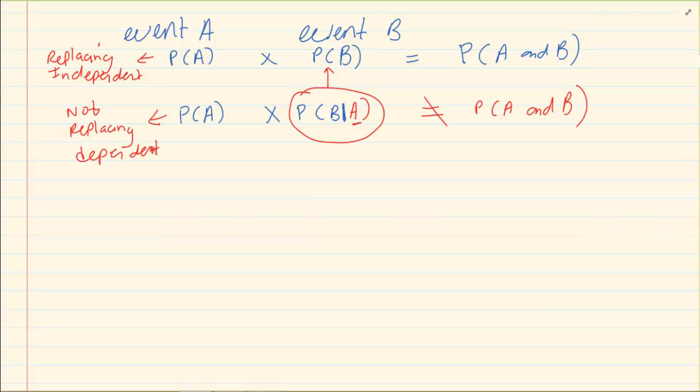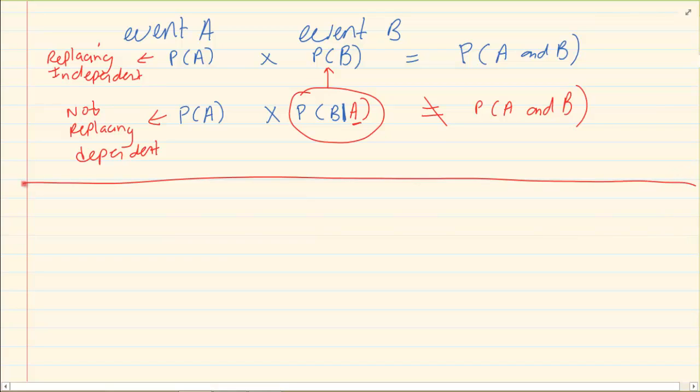Now those are the first two steps you need to understand. But what happens when they don't tell you? They don't tell you I'm replacing, I'm not replacing. They just tell you things like: prove if this event is independent or dependent. Or they'll say is P of A is equal to 0.55, P of B is equal to 0.4, and P of A and B is equal to 0.25. Determine if it is independent or dependent.